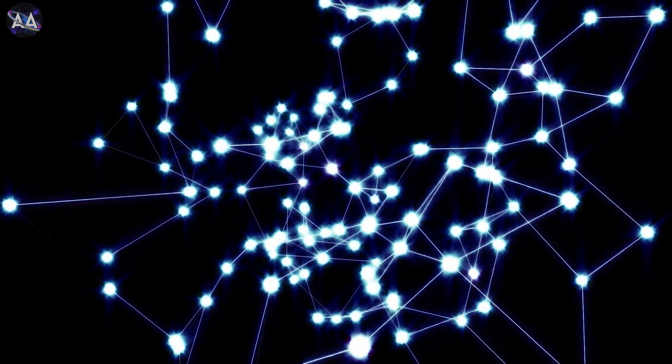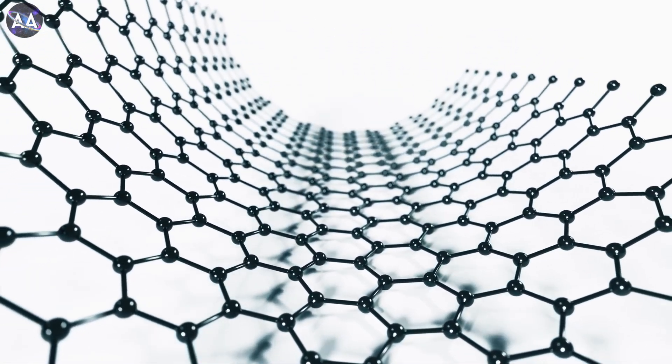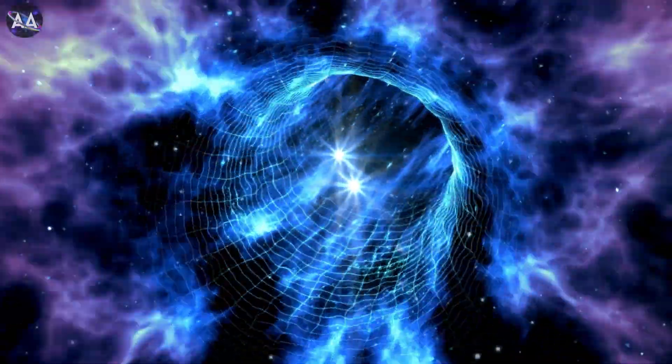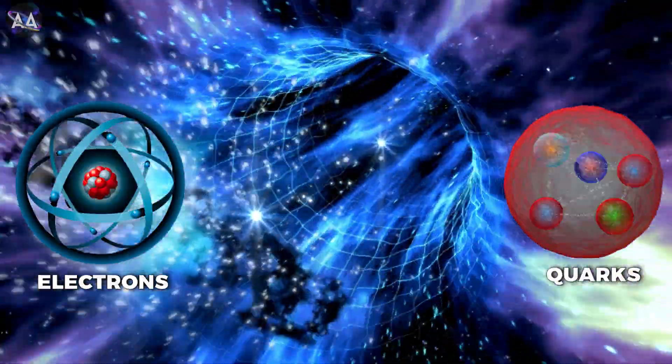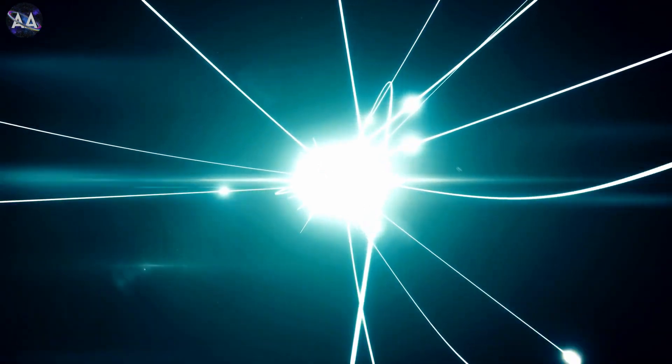String theory is the idea that the fundamental building blocks of everything in the universe – matter, energy, even space and time – aren't made of tiny particles like electrons or quarks, but instead are made of tiny vibrating strings. These strings are incredibly small, way smaller than an atom, and they can vibrate in different ways, just like the strings of a guitar.